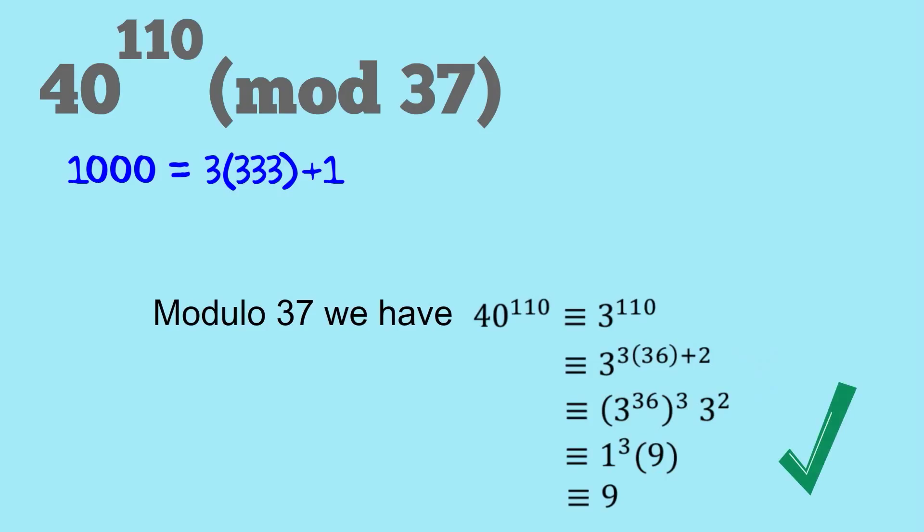Now, you generally wouldn't do this, but if the number was not 37, if it was something like 38, which is not prime, well, you could use Euler's theorem in a similar sort of way to the way I've done here. I'll let you look that up. So that's it for Modular Exponentiation Made Easy. I hope you've found it useful. Thank you.